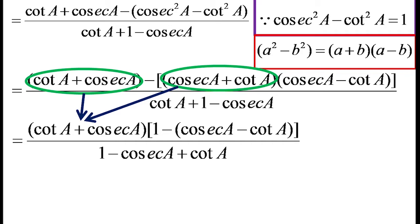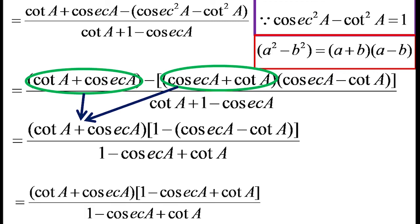Now in the numerator look at the box bracket after 1, that means 1 minus one more bracket we can see. So we have to change the sign of each and every term in that bracket. So it will be cot A plus cosec A, that first bracket, into that box bracket: 1 minus cosec A plus cot A by 1 minus cosec A plus cot A.